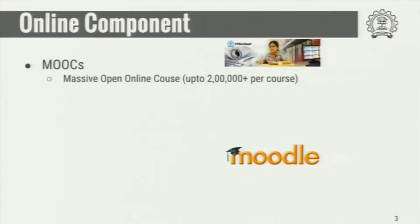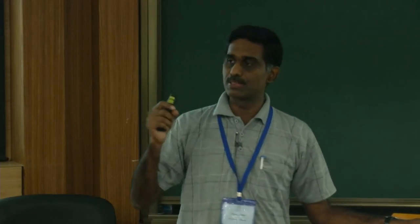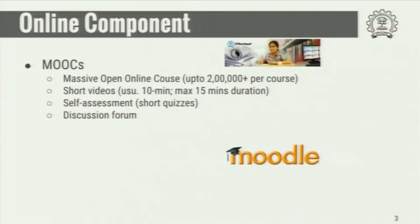MOOCs stands for Massively Open Online Course. It is massive because it can handle up to 2 lakh participants per course. It is open in the sense that anybody can join — usually there is no charge. The format involves very short videos, usually 5 to 10 minutes, followed by very short self-assessments. When people view a particular lecture online, they are given a very short quiz based on what they have learned — simple recollection of facts, not detailed assignments. There is also a discussion forum where they can post questions that instructors or others may answer.